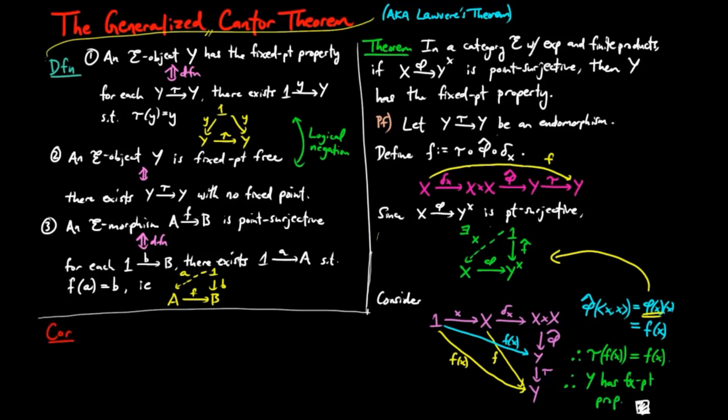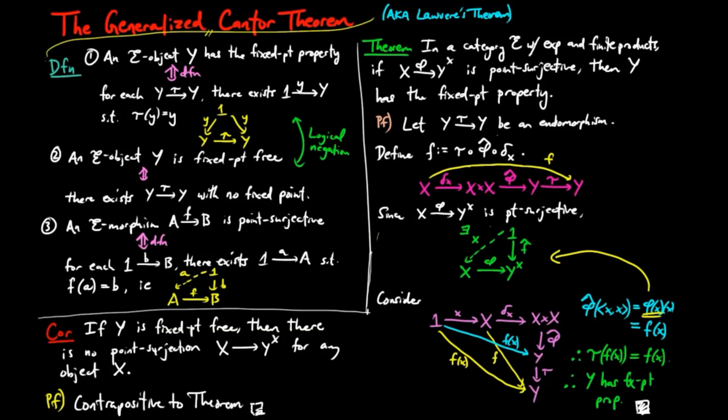Then we have, if y is fixed point free, then there is no point surjection x to y to the x for any object x. And this is just the contrapositive of what we have just proven.